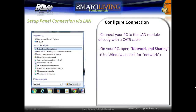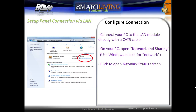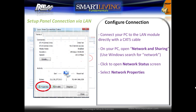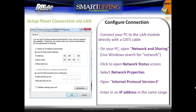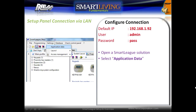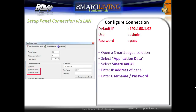Start by directly connecting your PC to the LAN module. On your PC, open up the Network and Sharing Centre, which can be located by typing Network in the Windows search. Click the local area connection to open the network status screen and select Network Properties. Enter a network address that is in the same range as the panel's address, such as shown on screen. In the SmartLeague software, open a SmartLeague solution, then select Application Data. Select the required SmartLAN G or S module, then enter the IP address of the panel, and enter a username and password if required. The defaults required are displayed on screen.